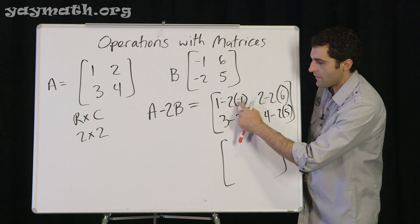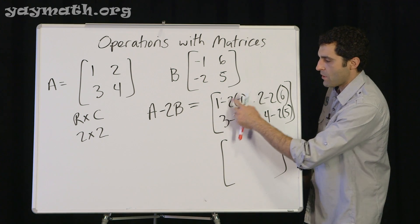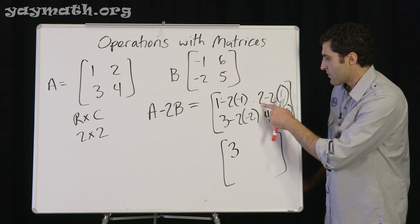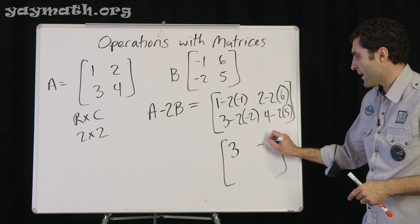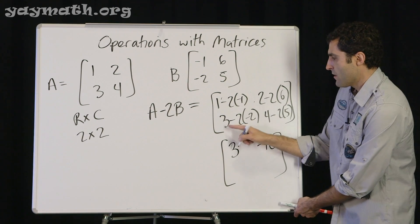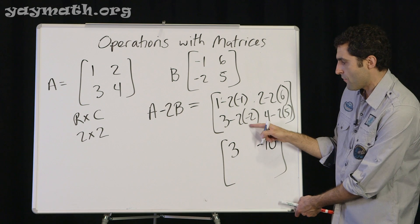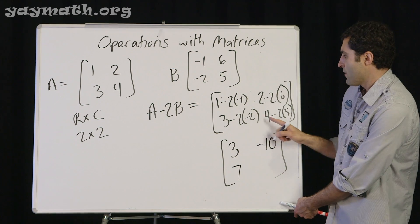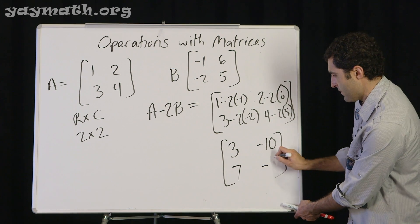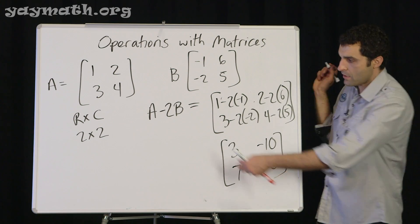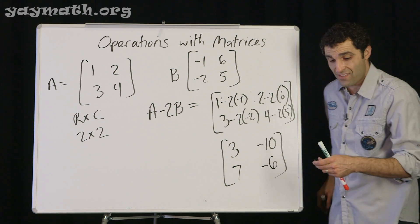One minus two times negative two is positive two. So this is one plus two. That's three. Two minus twelve. Negative ten. Three plus four. Seven. Four minus ten. Negative six. So we're welcome to do these types of matrix operations as well.